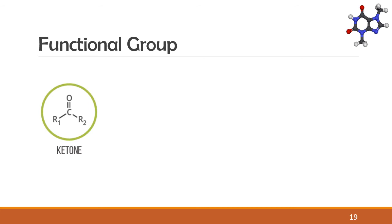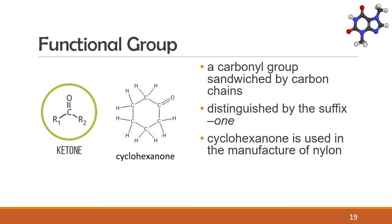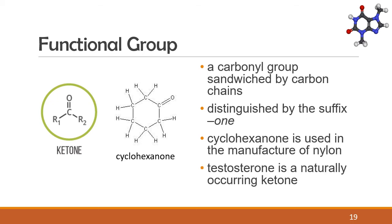Then we have ketone. A ketone has a carbonyl group sandwiched by carbon chains. Ketones are distinguished by the suffix "-one" in their name. Cyclohexanone is used in the manufacture of nylon. Testosterone is a naturally occurring ketone considered the male sex hormone.